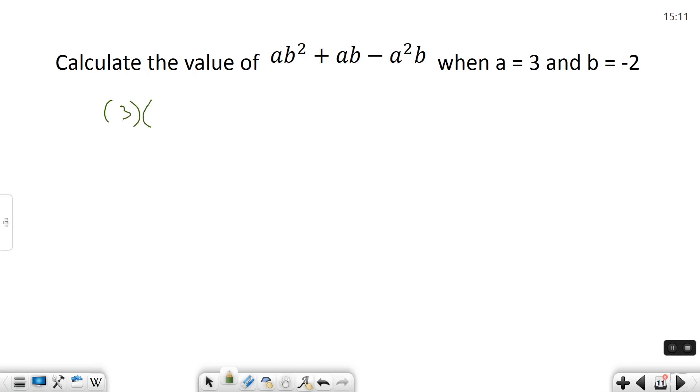So a is 3, b is negative 2. I have 3 times negative 2 squared plus 3 times negative 2 minus 3 squared times negative 2. Now I've used parentheses, I can go ahead and start evaluating this.